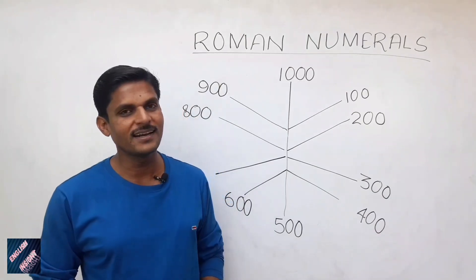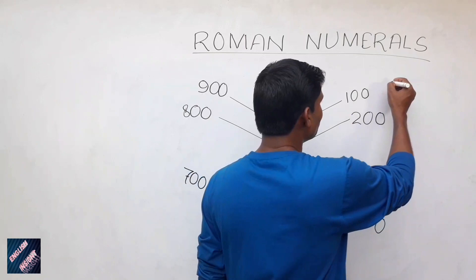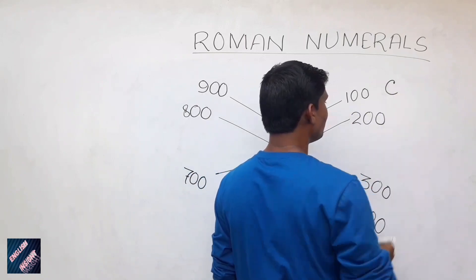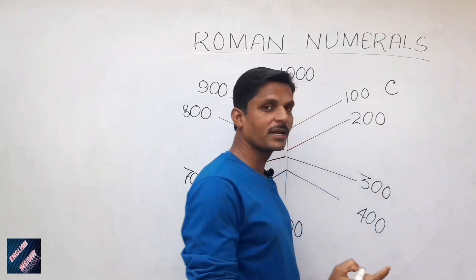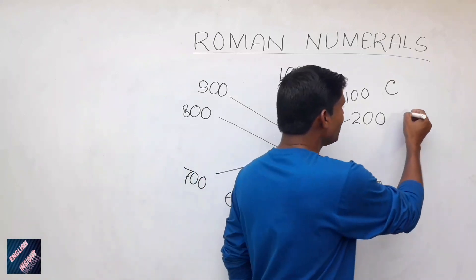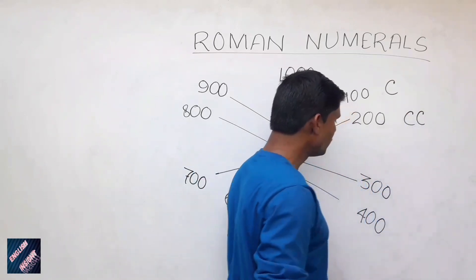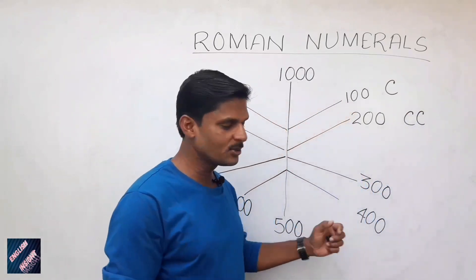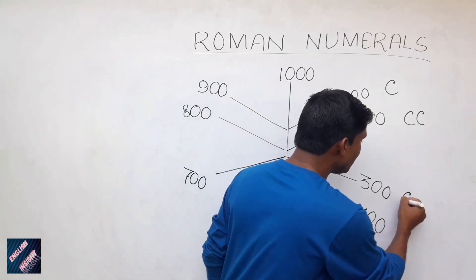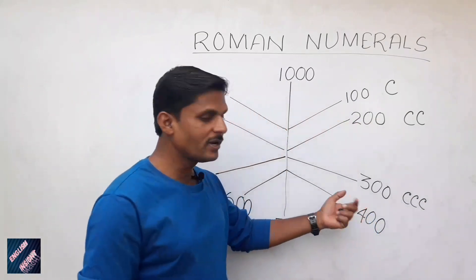100 is written as C in Roman numerals, as we have learned. What about 200? 200 is CC — double C. 300 is triple C — CCC. This is 300.